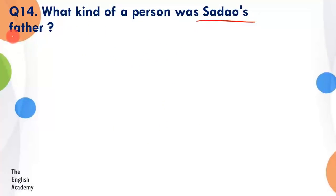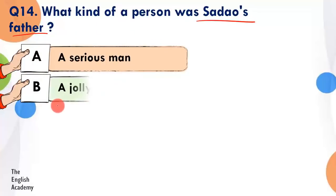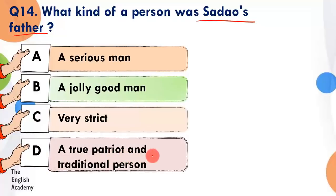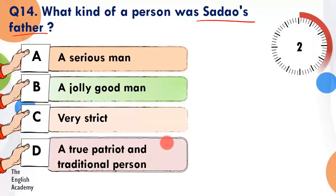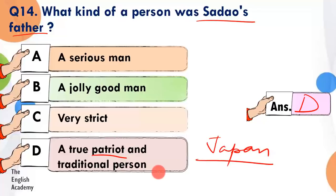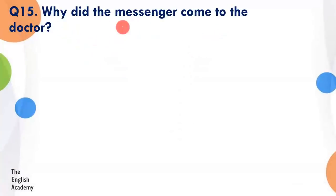Question number 14: What kind of person was Sadao's father? Option A: a serious man. Option B: a jolly good man. Option C: very strict. Option D: a true patriot and traditional person. The answer is Option D — he was a patriot, yaani woh apne country Japan ko bohut zyada pyaar karte the, aur woh ek traditional person the, jo apni traditions mein believe karte the.